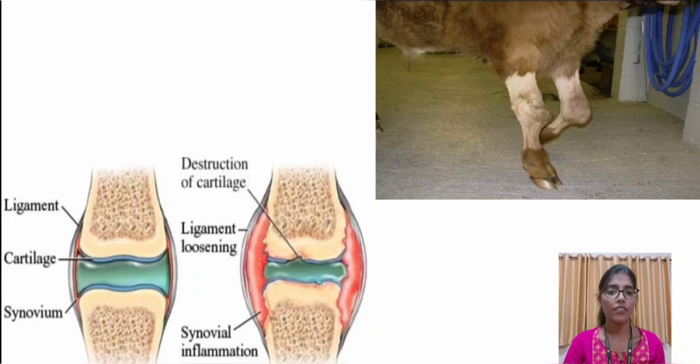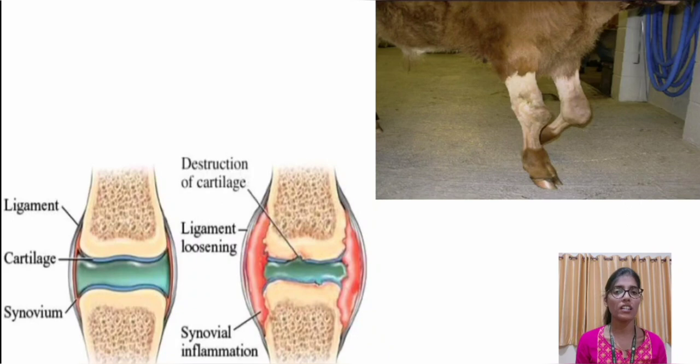You can see here the difference between a healthy joint and a damaged joint. In a damaged joint, there is synovial inflammation and destruction of cartilage.